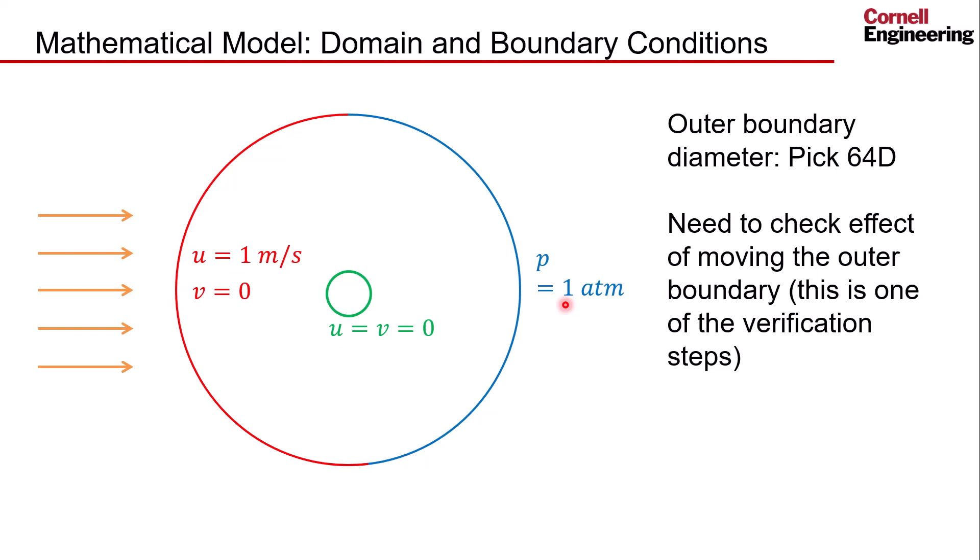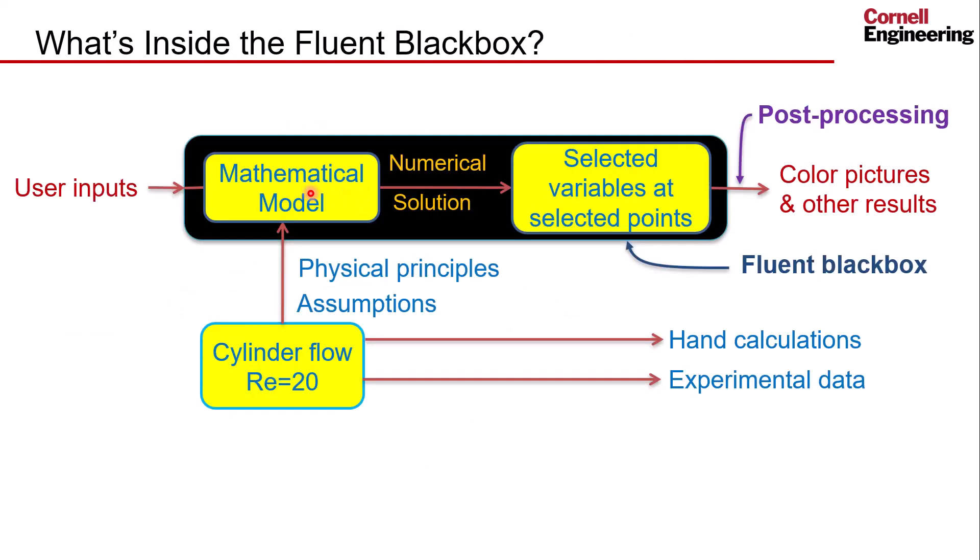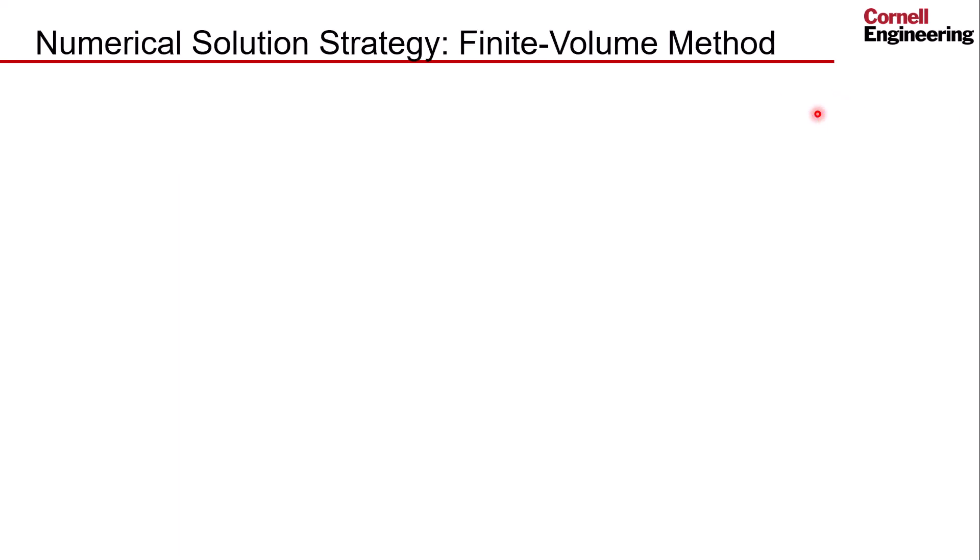That gives you the governing equations and boundary conditions, so I've gone through what is the mathematical model. Quickly, the numerical solution strategy that's used by the Fluent Solver is based on the finite volume method. The numerical solution will yield the selected variables as primary unknowns at selected points, and let's look at what the selected points are. Everything else is calculated through post-processing.